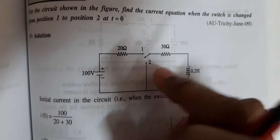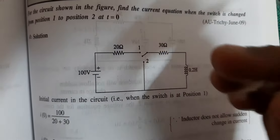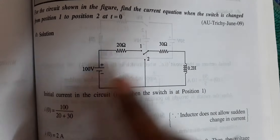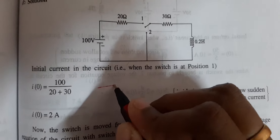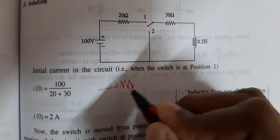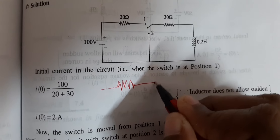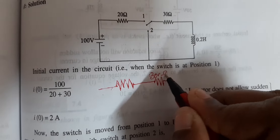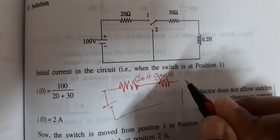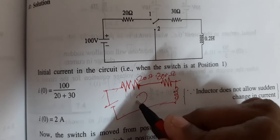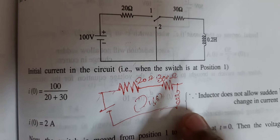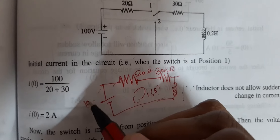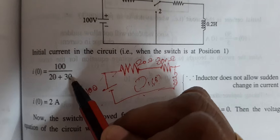We consider the initial current with the switch in position 1, which is closed. The circuit has 30 ohm, 20 ohm, and a voltage source with an inductor. The current I(t) equals V by R, where V is 100 and R is 20 plus 30, giving an initial current of 2A.